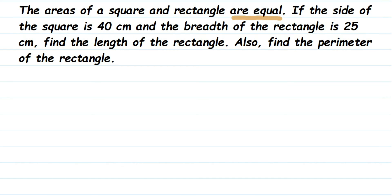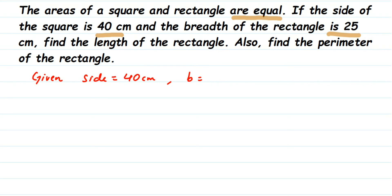We have been given the side of the square is 40 centimeters and the breadth of the rectangle is 25 centimeters. So we know two things here — the side of the square and the breadth of the rectangle. We also know that the areas of the square and rectangle are equal. Everything is in the same units — centimeters.